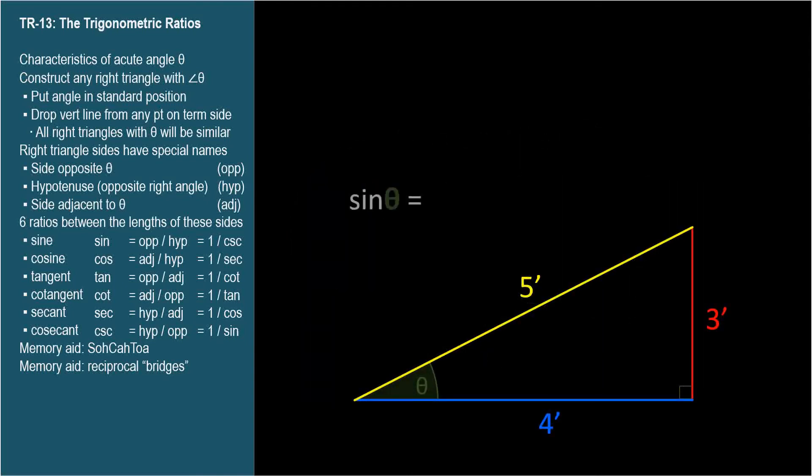Try this one on your own. What's the sine of theta? Use SOHCAHTOA and pause. Opposite over hypotenuse, 3 feet over 5 feet, 0.6.